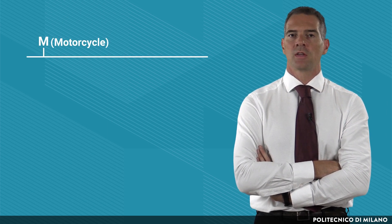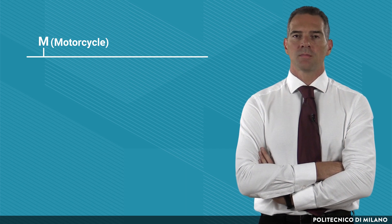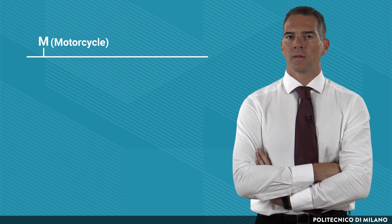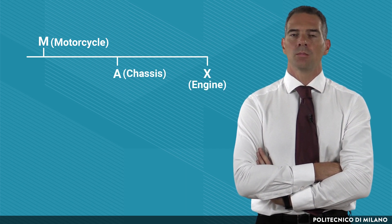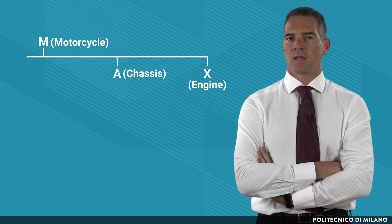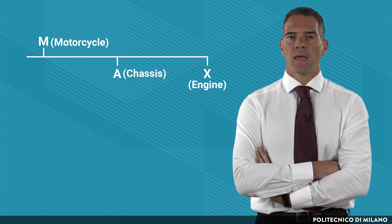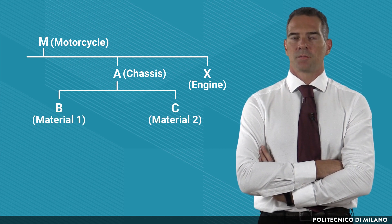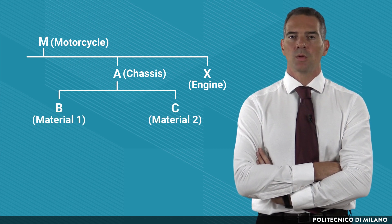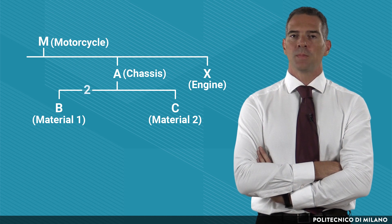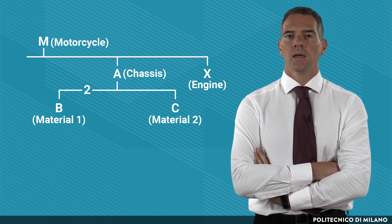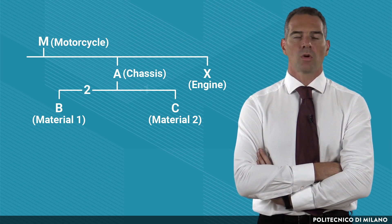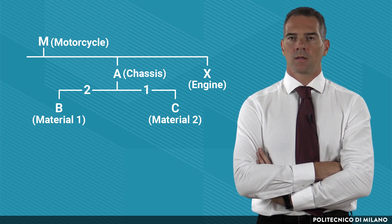In this stylized bill of material we have a higher level item M, which is for instance a motorcycle, made up of two sub-components A and X, where A could be a chassis and X could be the engine. A is itself made up of two sub-components B and C, with a coefficient of use of two pieces of B per one piece of A, and one piece of C per item A.